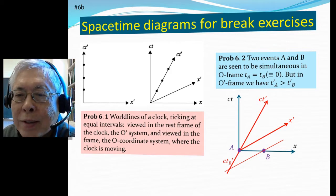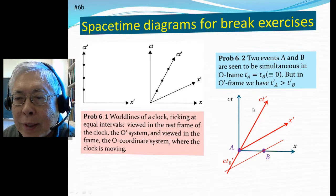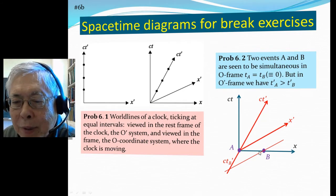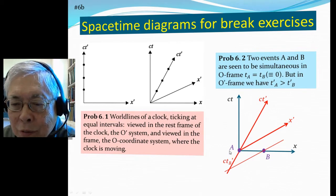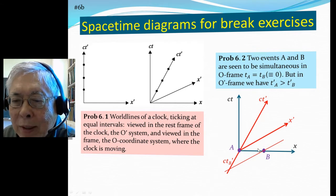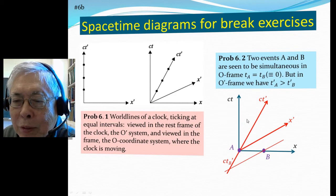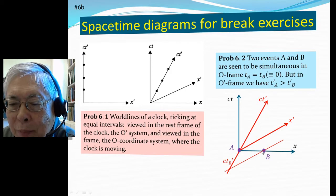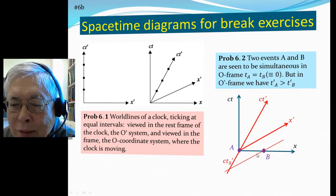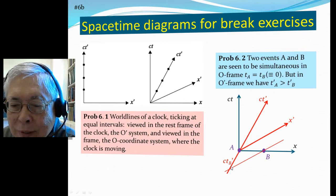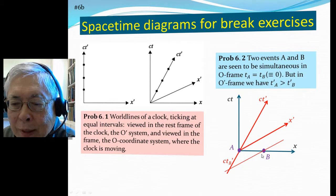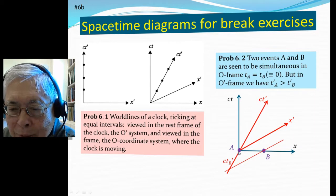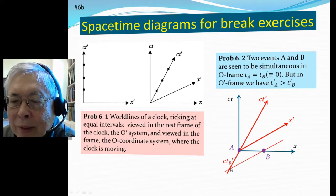The second problem displays relativity of simultaneity. The two events are simultaneous in the old frame, shown with blue lines. Events A and B are along the x-axis, so they have t_A = t_B = 0, so they're simultaneous. But in the moving frame, the two axes move in. Now t_A prime is zero, but t_B prime is negative when projected onto the new t prime axis, so t_A prime is greater than t_B prime.